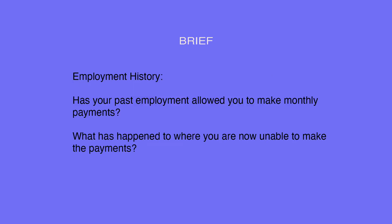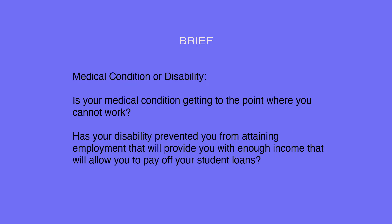Employment history: Has your past employment allowed you to make monthly payments? What has happened to you where you are now unable to make the payments? Medical condition or disability: Is your medical condition getting to the point where you cannot work? Has your disability prevented you from attaining employment that will provide you with enough income to pay off your student loans?